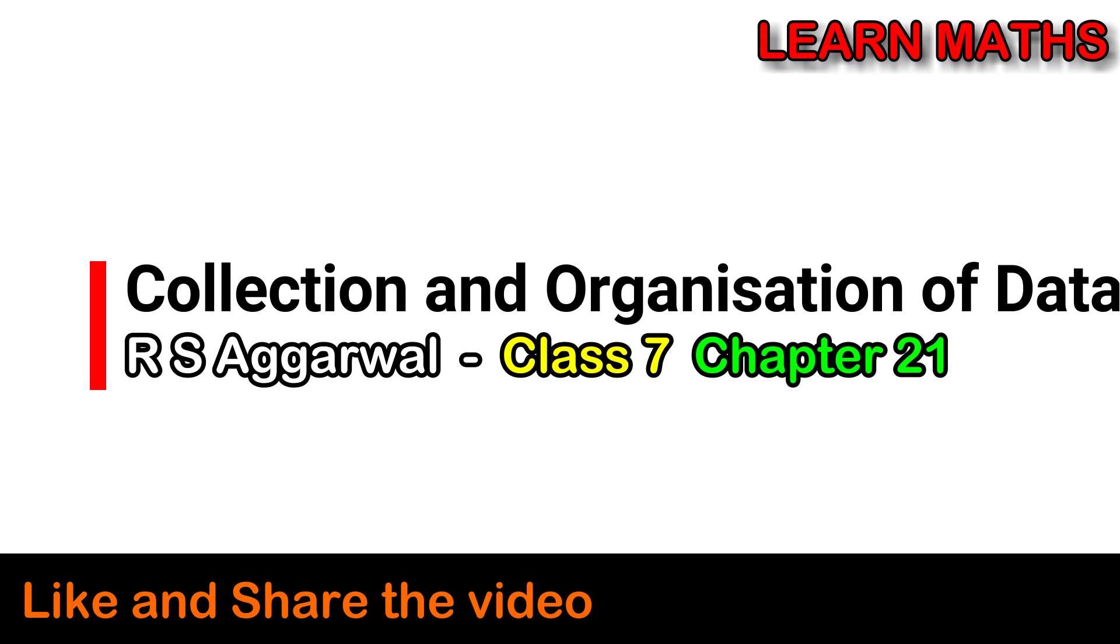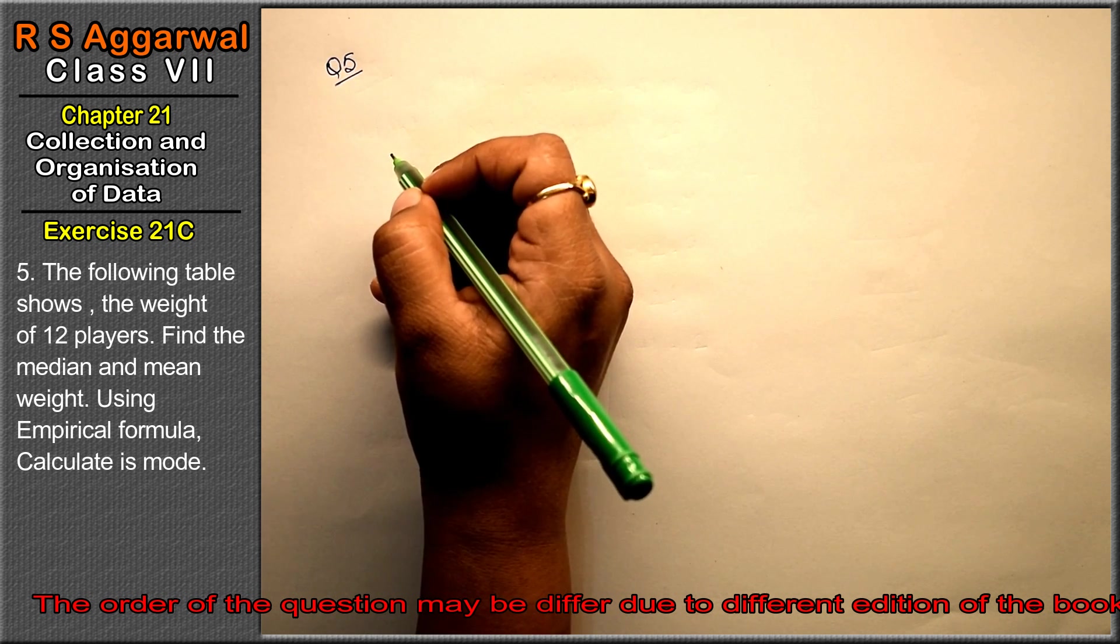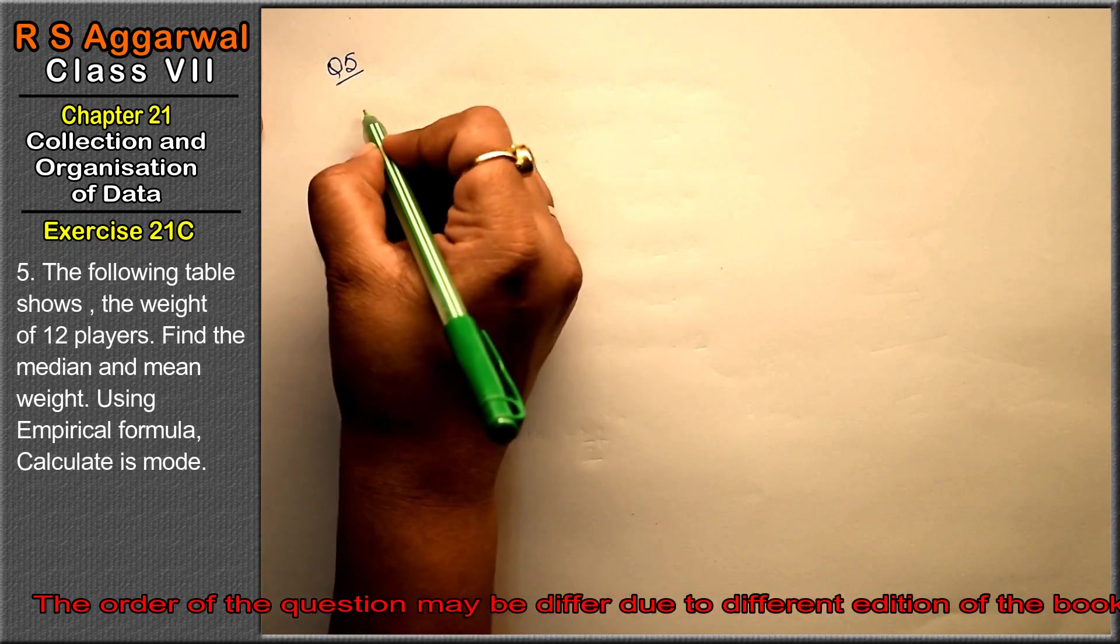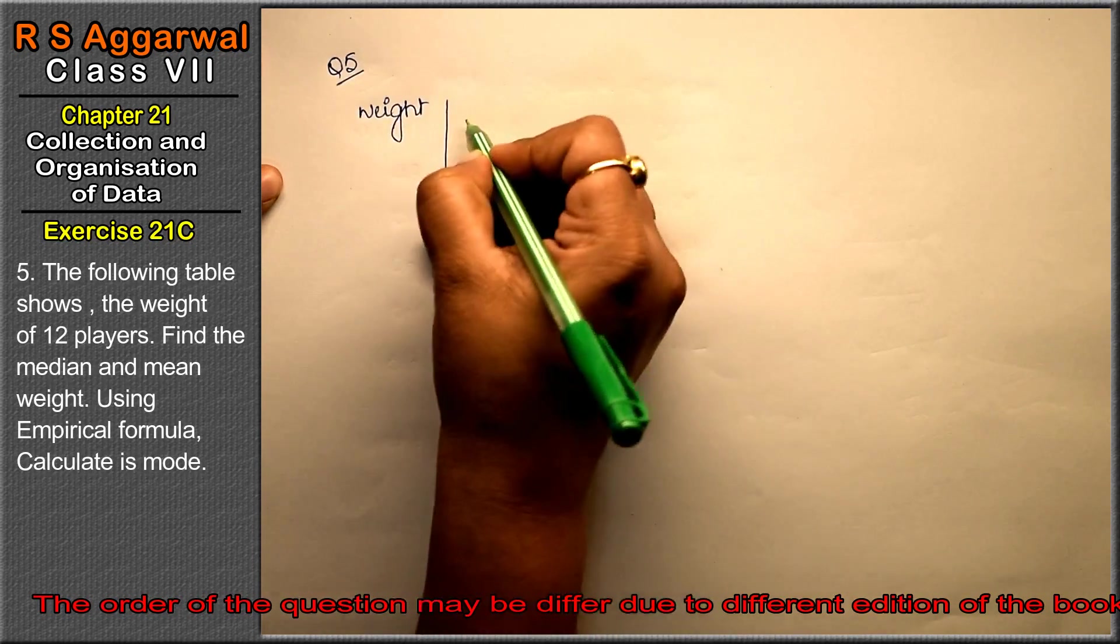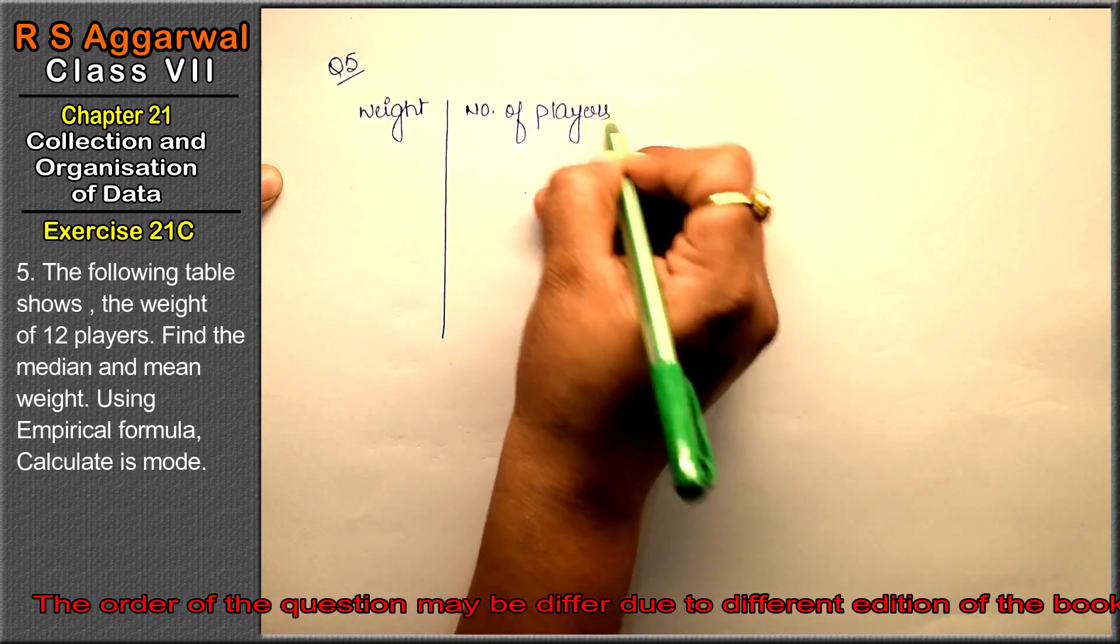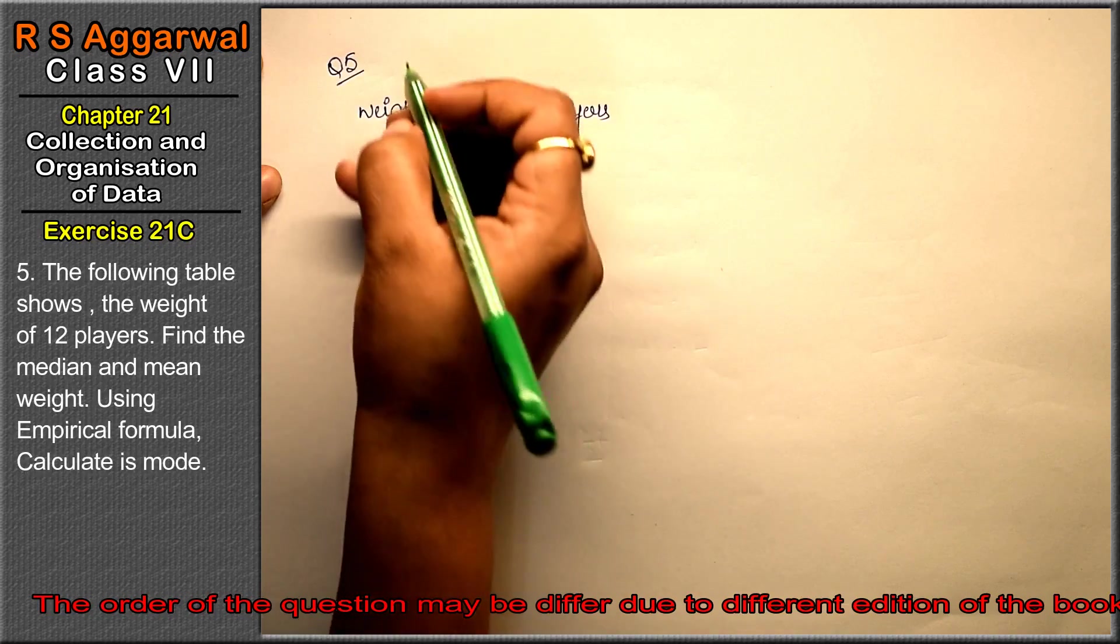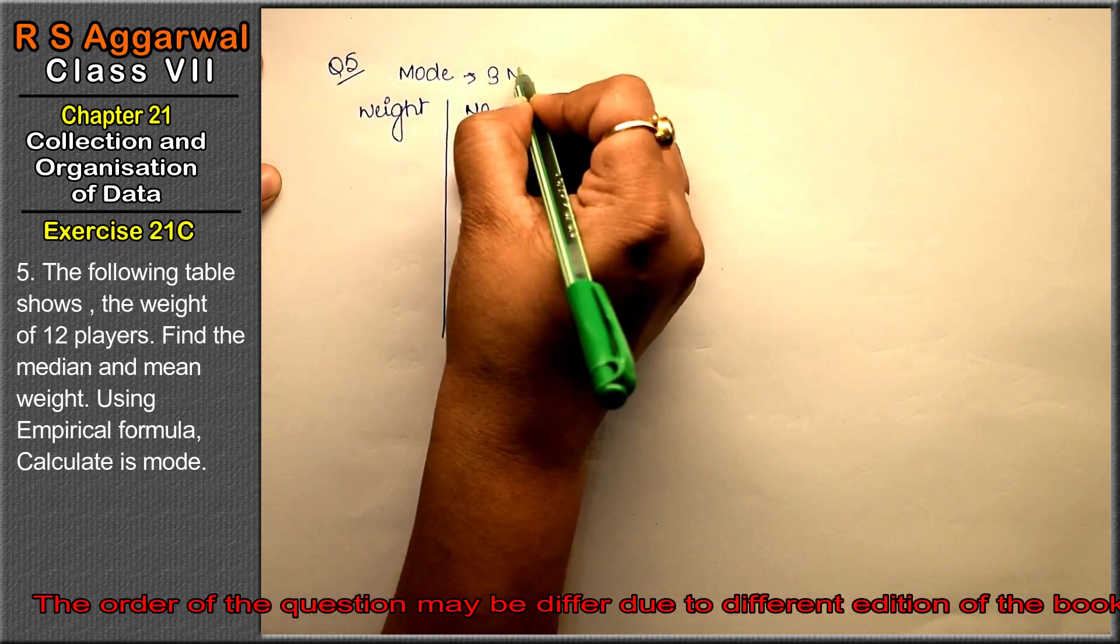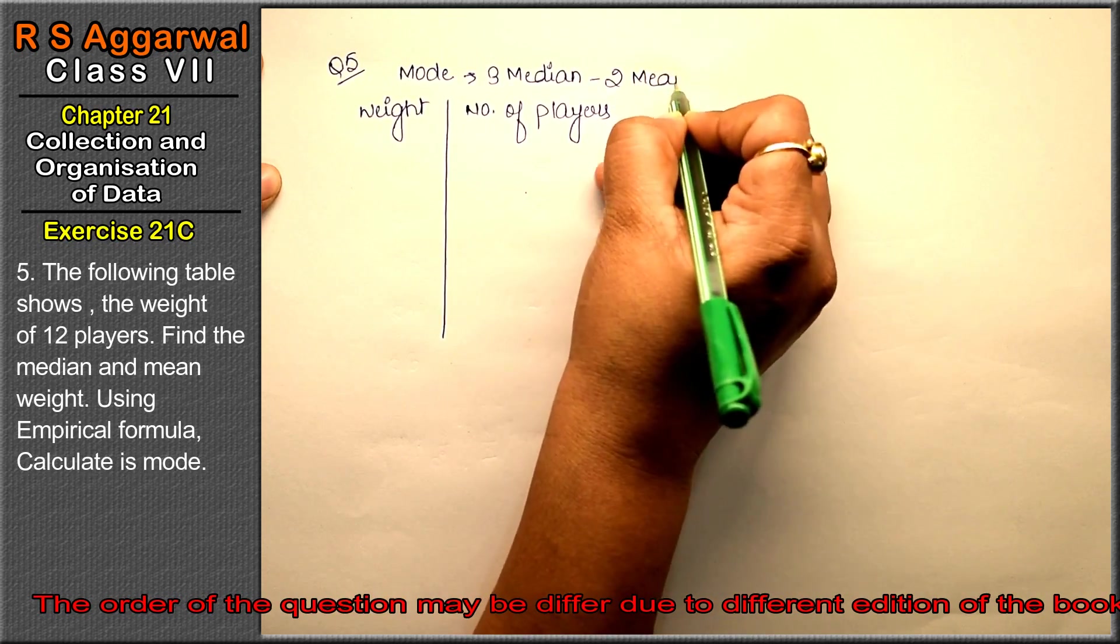Let's do question number 5 of exercise 21C on collection and organization of data. The question states: the following table shows the weight of 12 players. We have weight and number of players. Find the median and mean weight using empirical formula to calculate its mode. The empirical formula for mode is: thrice median minus twice mean.